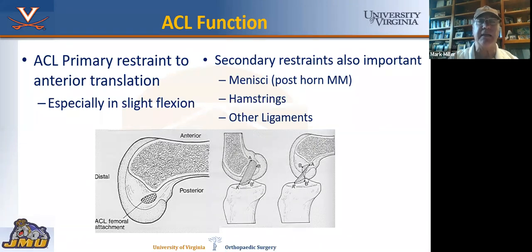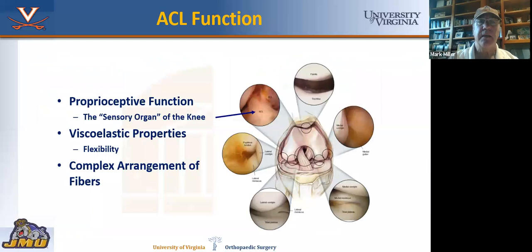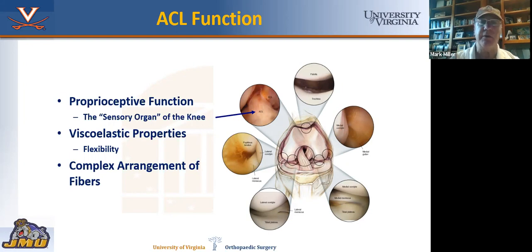The ACL is important for anterior translation. It is also the proprioceptive sensory organ of the knee. It has Purkinje fibers that are important for sensation, viscoelastic properties that allow it to be flexible, and a complex arrangement of fibers.